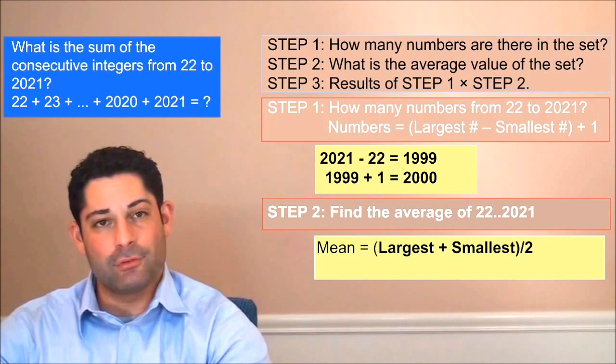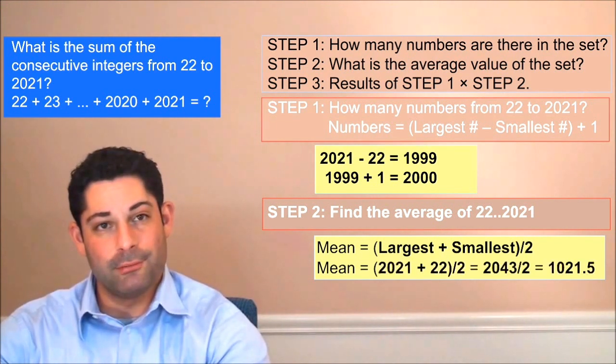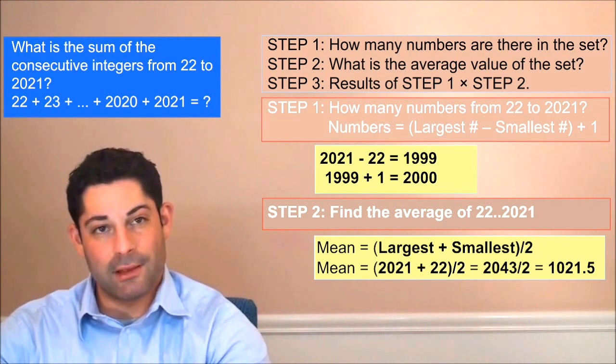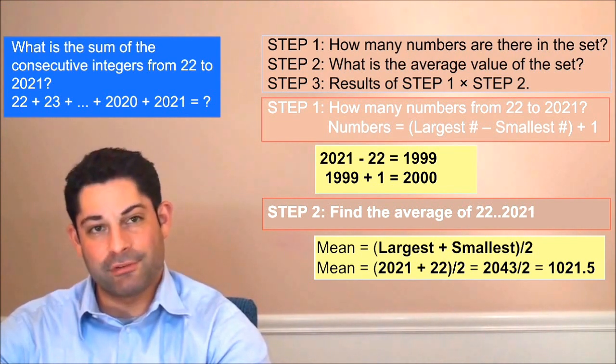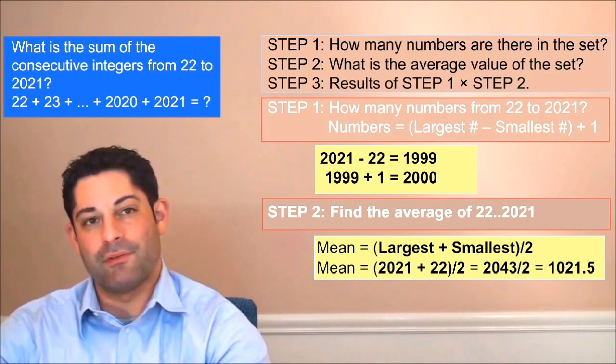So we have 2,021 plus 22 divided by 2 or 1,021.5. So the mean average of our set is 1,021.5.